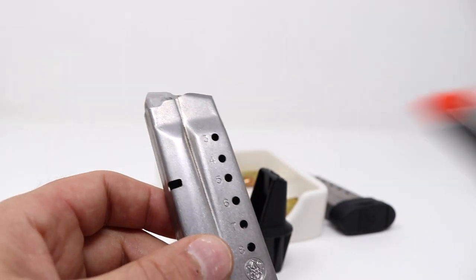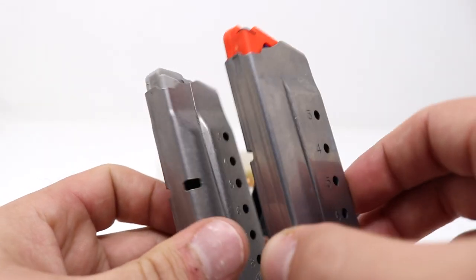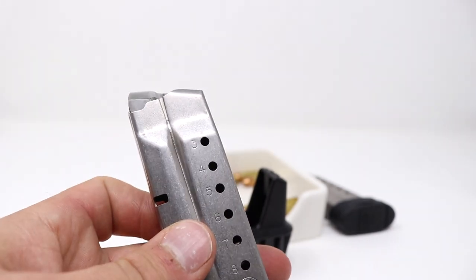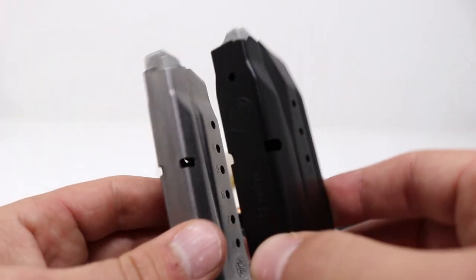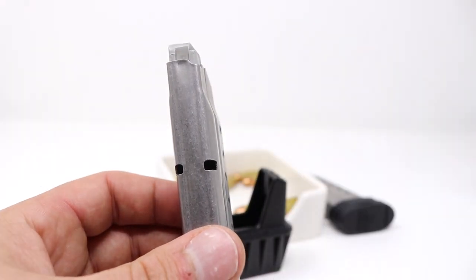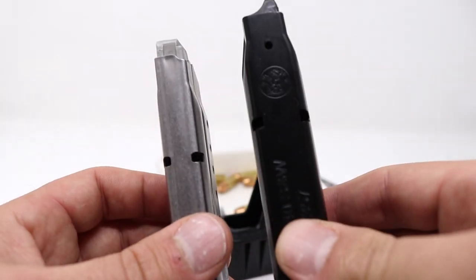We're not talking about the Shield 45, which is a much wider and longer magazine. We're not talking about the M&P Compact, which is a much larger magazine, or the full-size Smith & Wesson M&P.